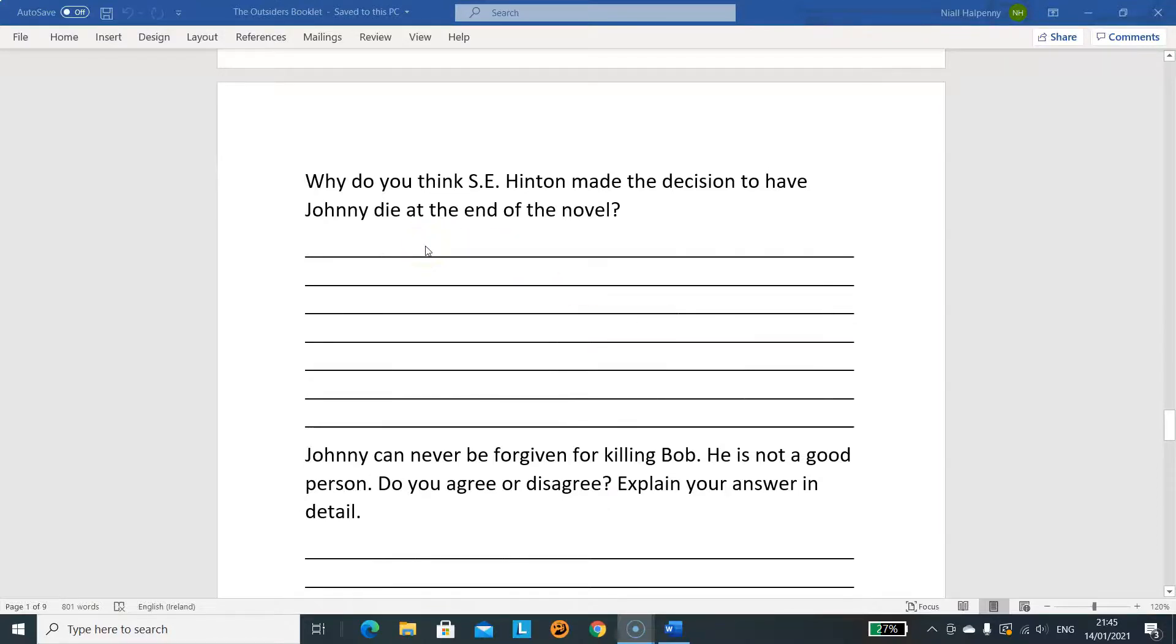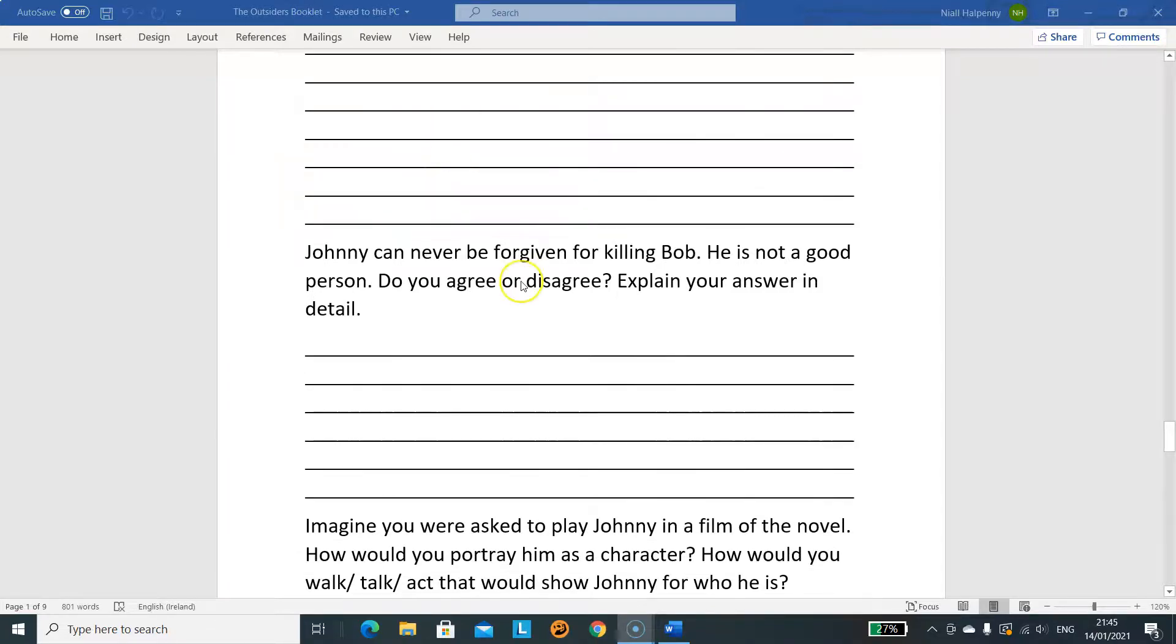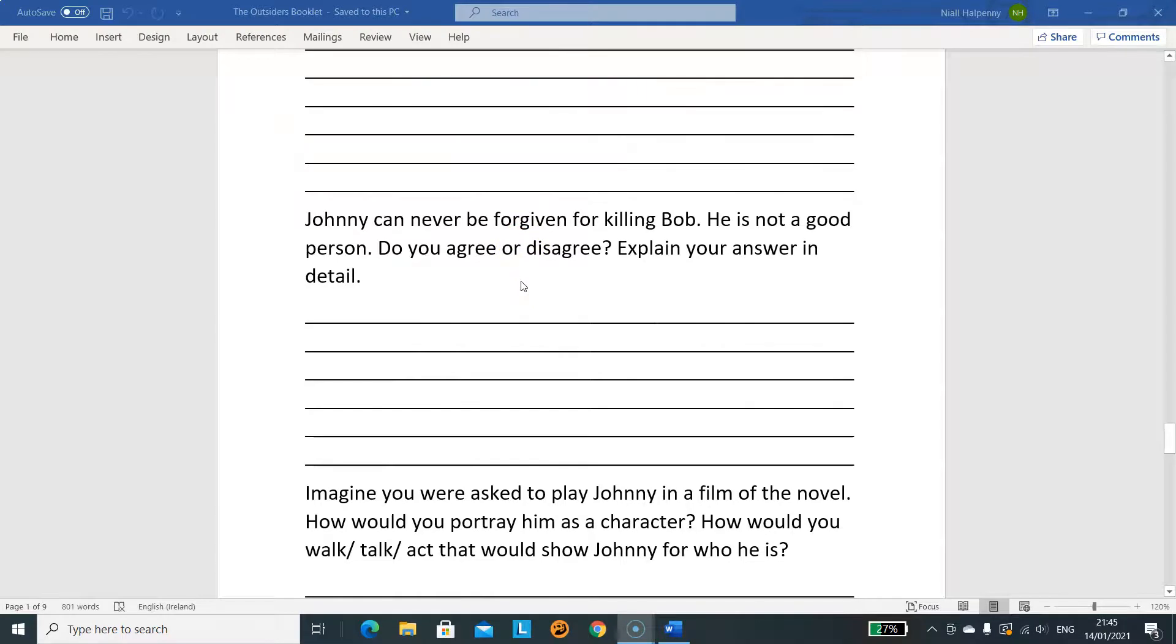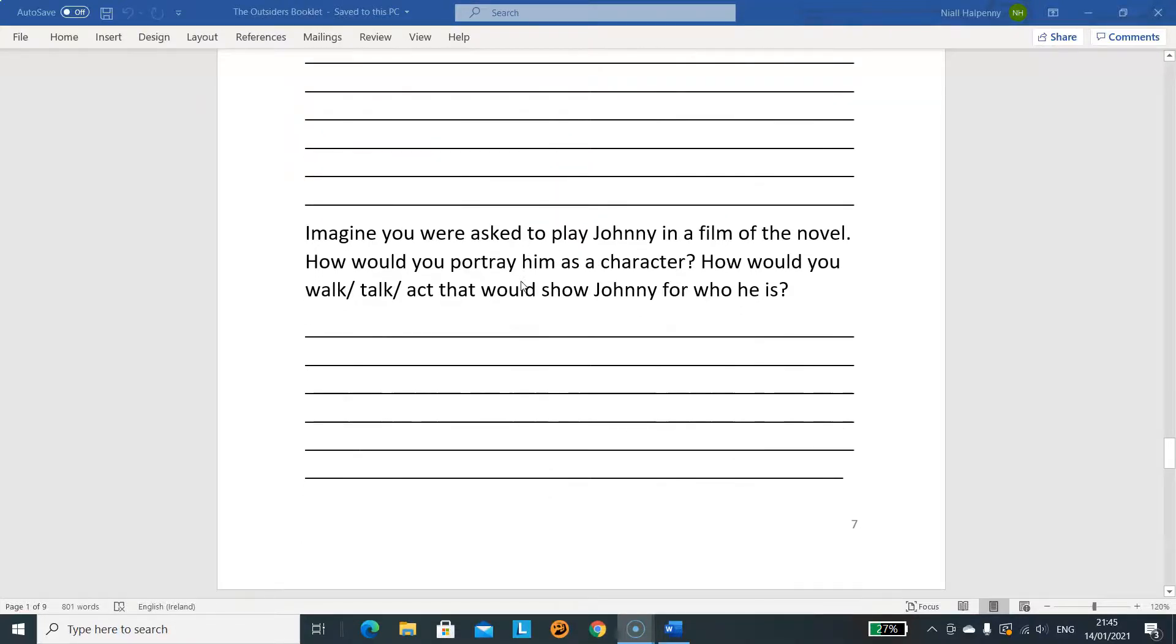Why do you think S.E. Hinton made a decision to have Johnny die at the end of the novel? Again, you may only have one or two reasons, like short reasons, but you need to explain them in full. Full sentences, full explanations please. Johnny can never be forgiven for killing Bob. He's not a good person. I know we had a bit of discussion about this before, and we had a bit of disagreement. I want you to stand up for your point that you believe in. I think most of you did believe that he was a good person and you could forgive him for this, but I want an explanation. I want you to form an argument for that. Then imagine you were asked to play Johnny in a film of the novel. How would you portray him as a character? How would he walk? How would he talk? How would he act? Think about mannerisms, think about body language. What way would Johnny be? What do we know about him? What body language are we told about him? What would he do with his hair? What would he do with his hands? How would his eyes look? How would his clothes be?